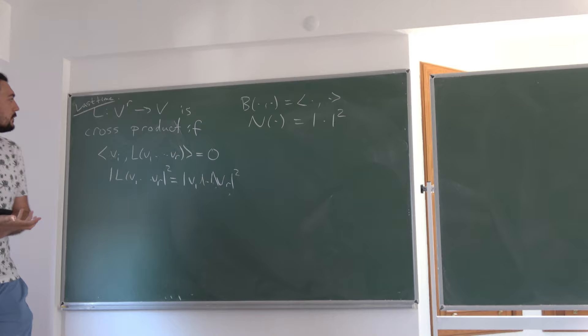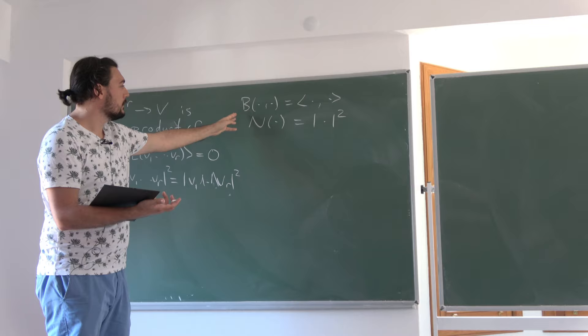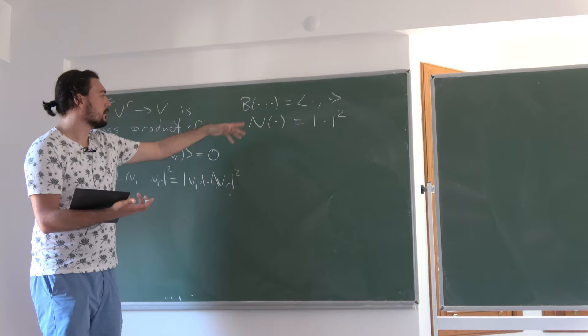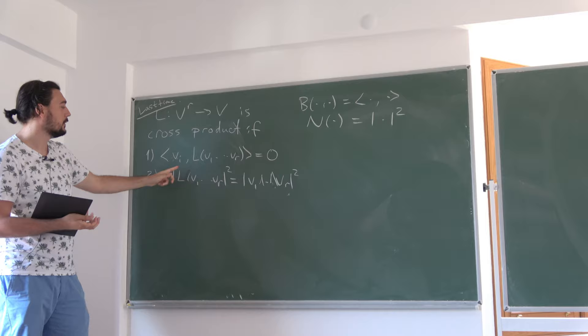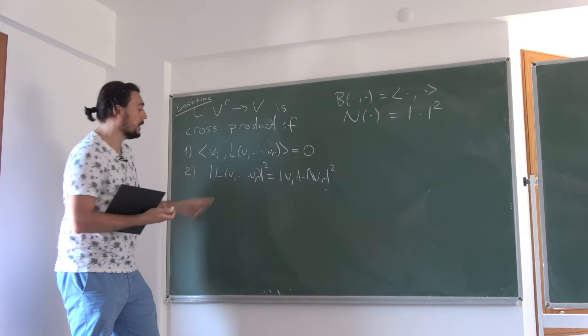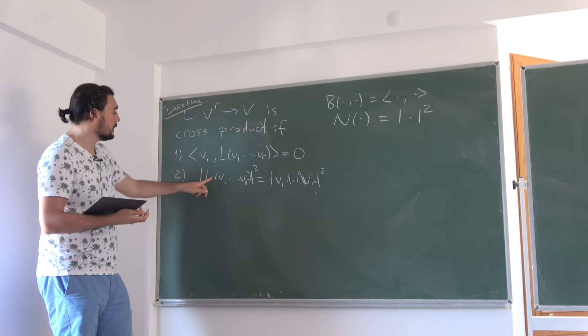Last time we defined what it means to be a cross product. I wanted to remind you of that definition. We're mostly focusing on real numbers, so we also want to use the usual inner product and norm squared notation. Remember, this multilinear map is a cross product if the output vector is always perpendicular to all the inputs and the norm of the output squared equals the norm of the wedge products of the input vectors.